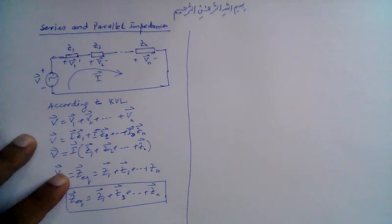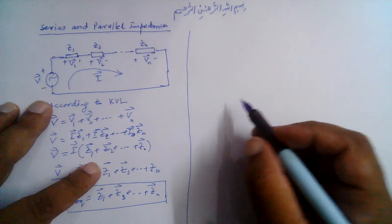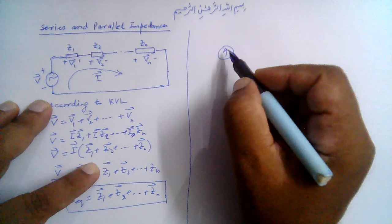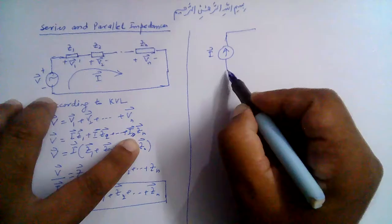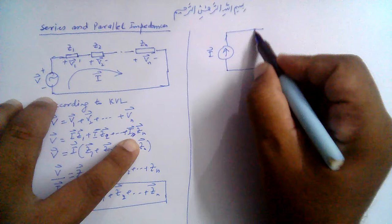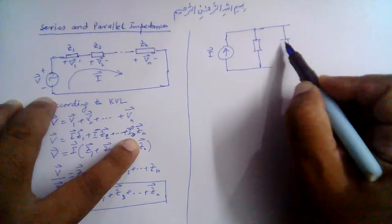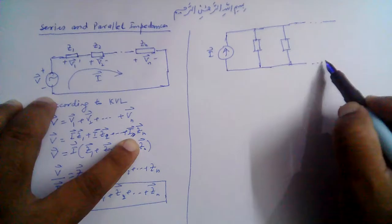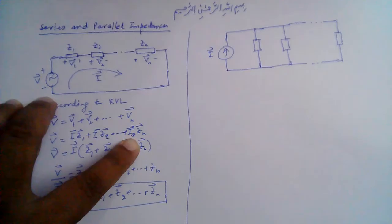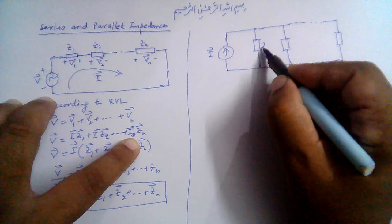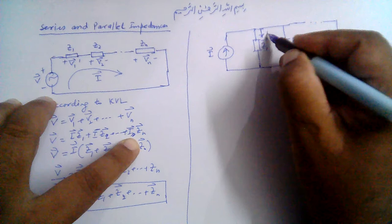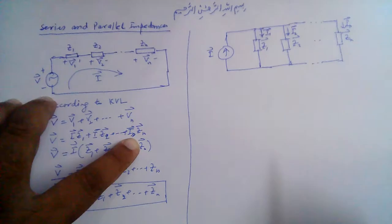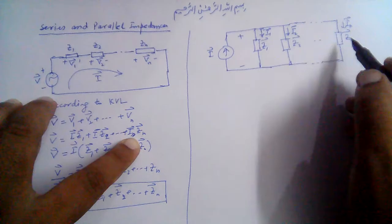Let us now consider a combination of impedances in parallel. For example, let's assume a current source i, and we have a number of impedances connected in parallel: z1, z2, and zn. Currents i1, i2, and in flow through each respectively. The voltage drop across all of them is the same since they are in parallel — let it be v.